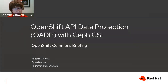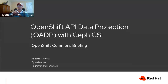My name is Dylan Murray. I come from the OpenShift migration engineering team. We learned a lot during the migration work using Velero, and we wanted to take that knowledge and apply it to what we're calling OADP — essentially our backup and restore initiative at Red Hat.